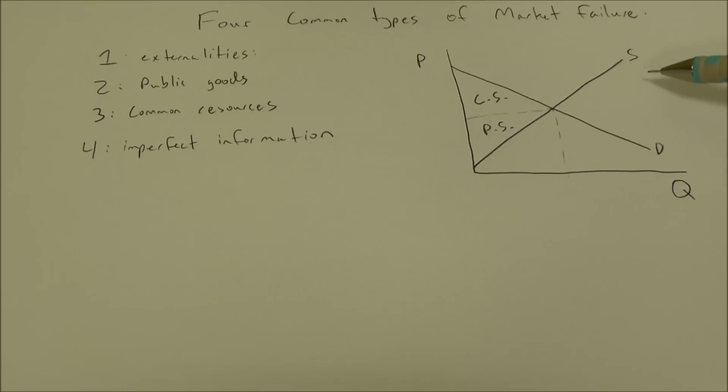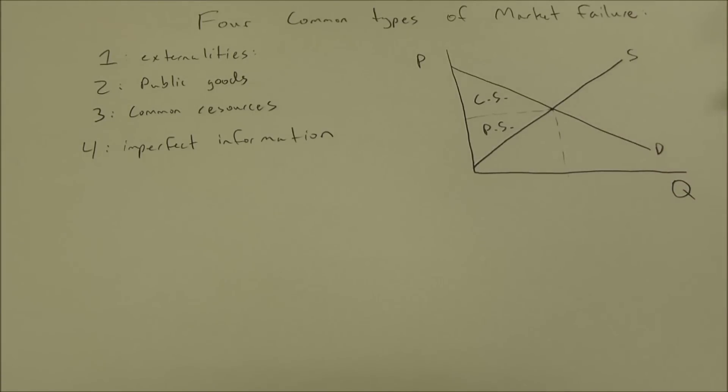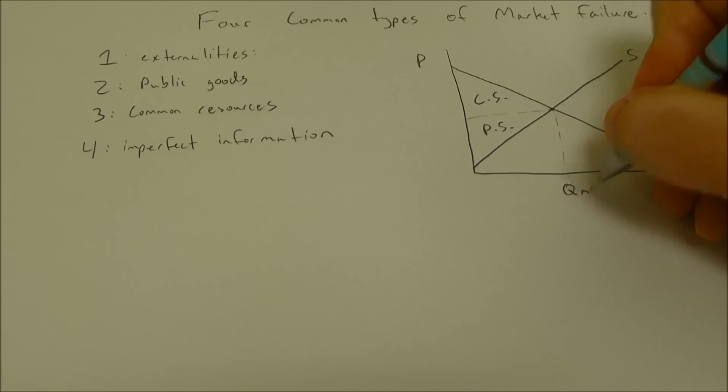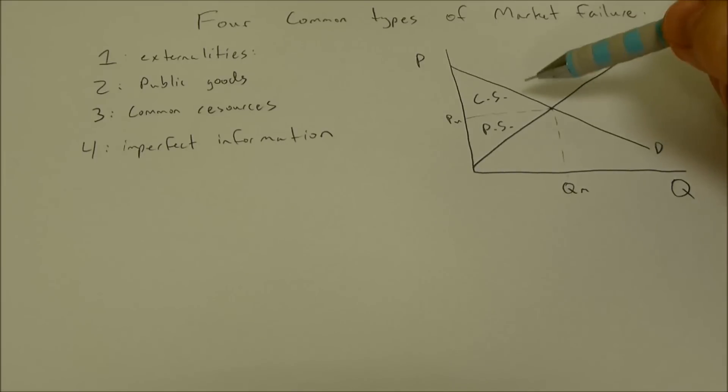We assume that supply and demand interact in such a way that we get a market quantity and a market price, and this equilibrium makes consumer surplus plus producer surplus as large as it can possibly be.